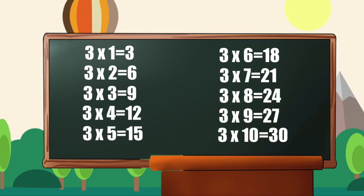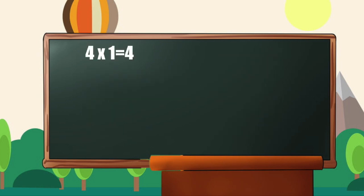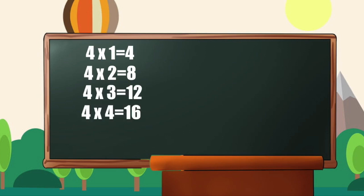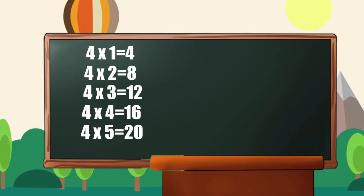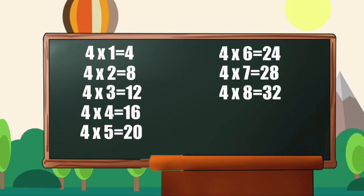3 10s are 30. Table of 4: 4 1s are 4, 4 2s are 8, 4 3s are 12, 4 4s are 16, 4 5s are 20, 4 6s are 24, 4 7s are 28, 4 8s are 32.